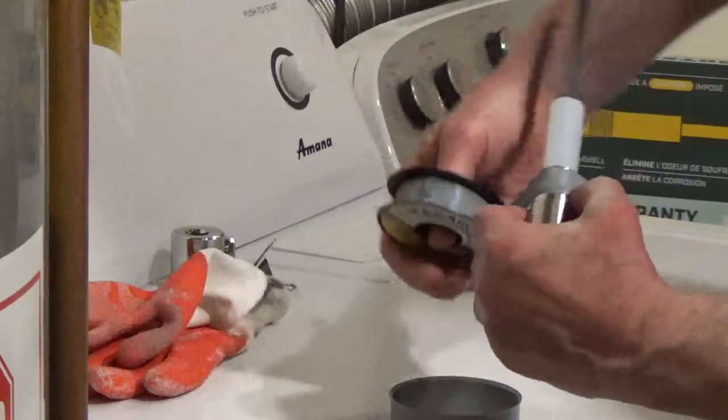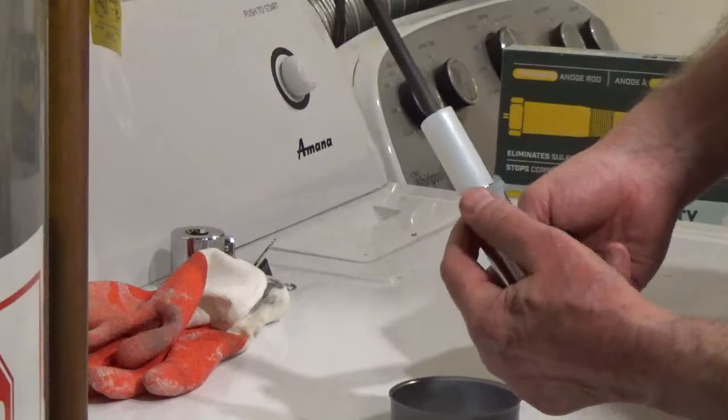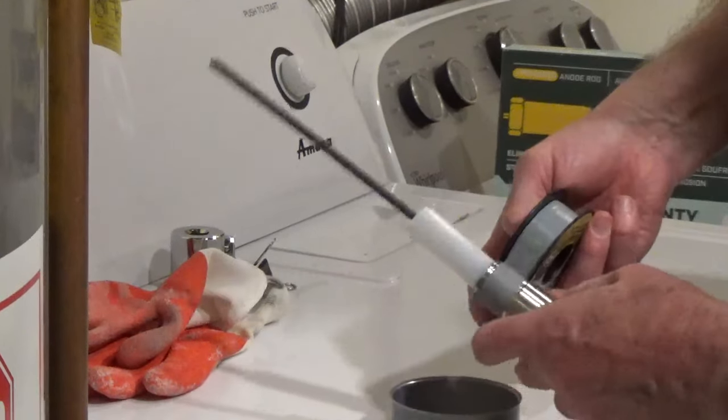Wrap plumber's PTFE tape around the male threads of the powered anode rod 3 to 5 times clockwise.